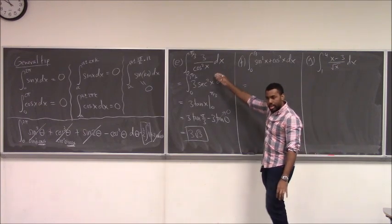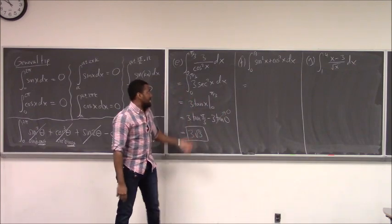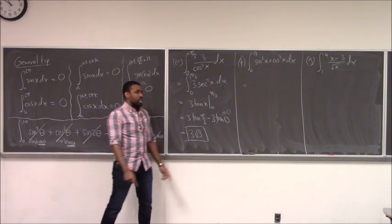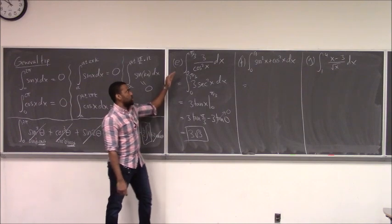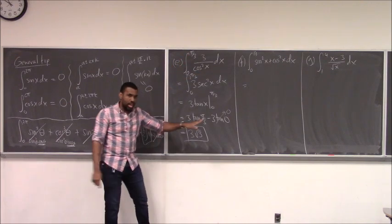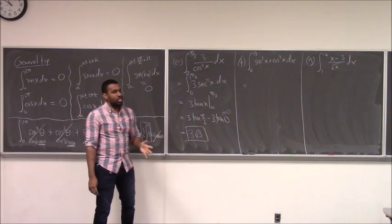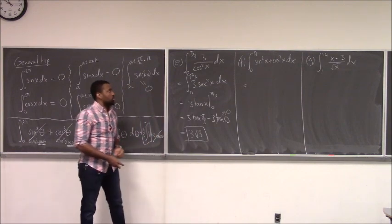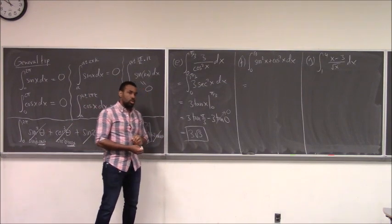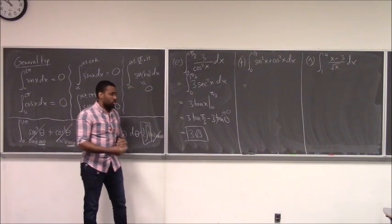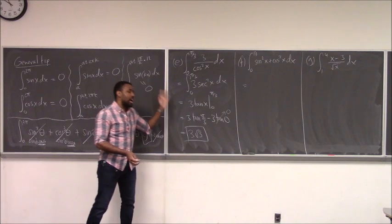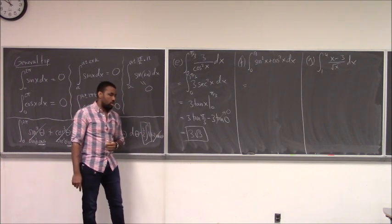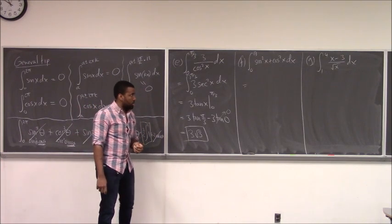So you need to remember your trig identities. Just like with derivatives, simplifying before you apply a rule can do wonders. The key mistake to avoid is applying the integral to a product or quotient directly — integrals don't distribute across products or divisions, just as derivatives don't. Your first instinct should always be: can I simplify or rewrite this? That will make life much easier.